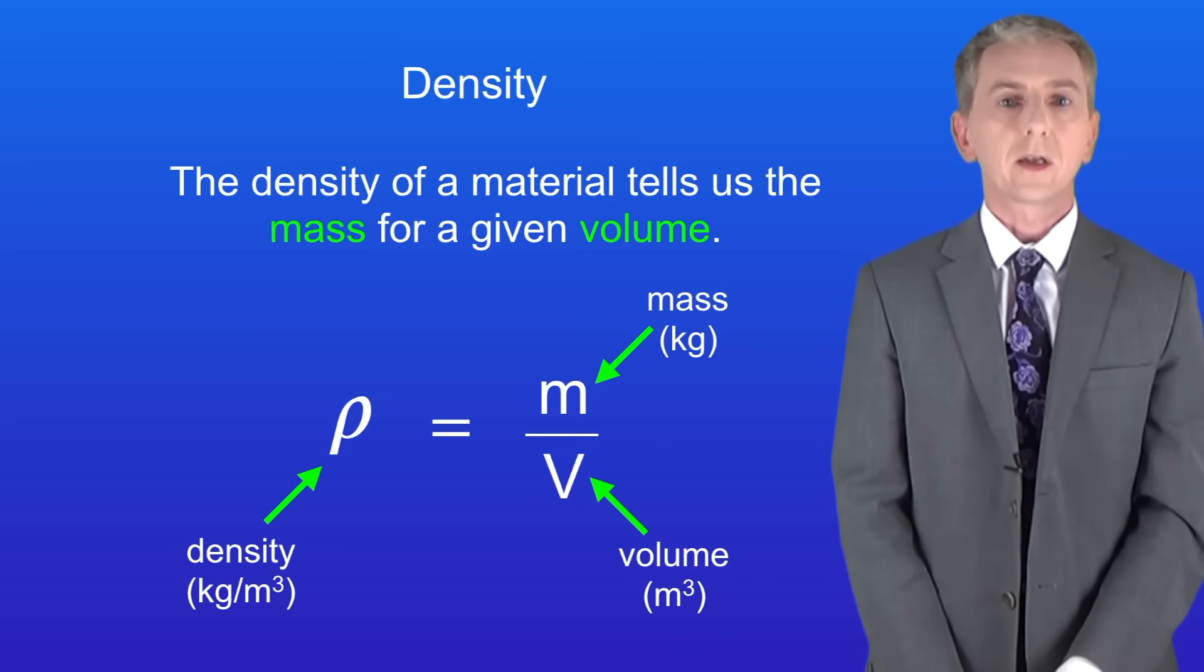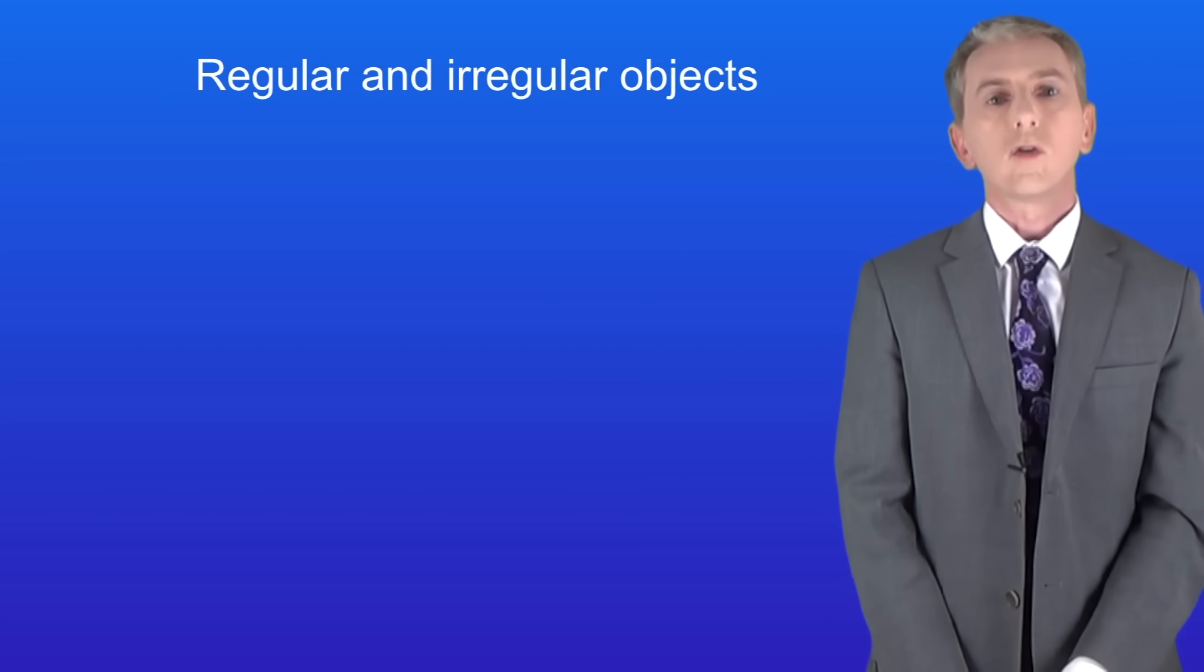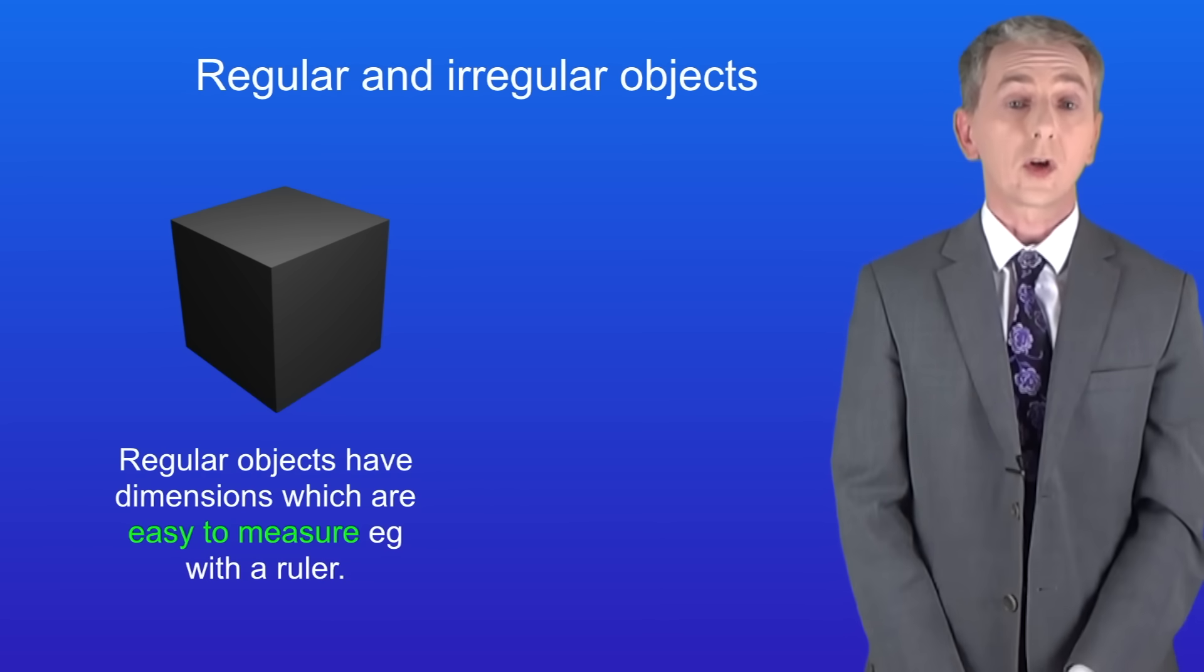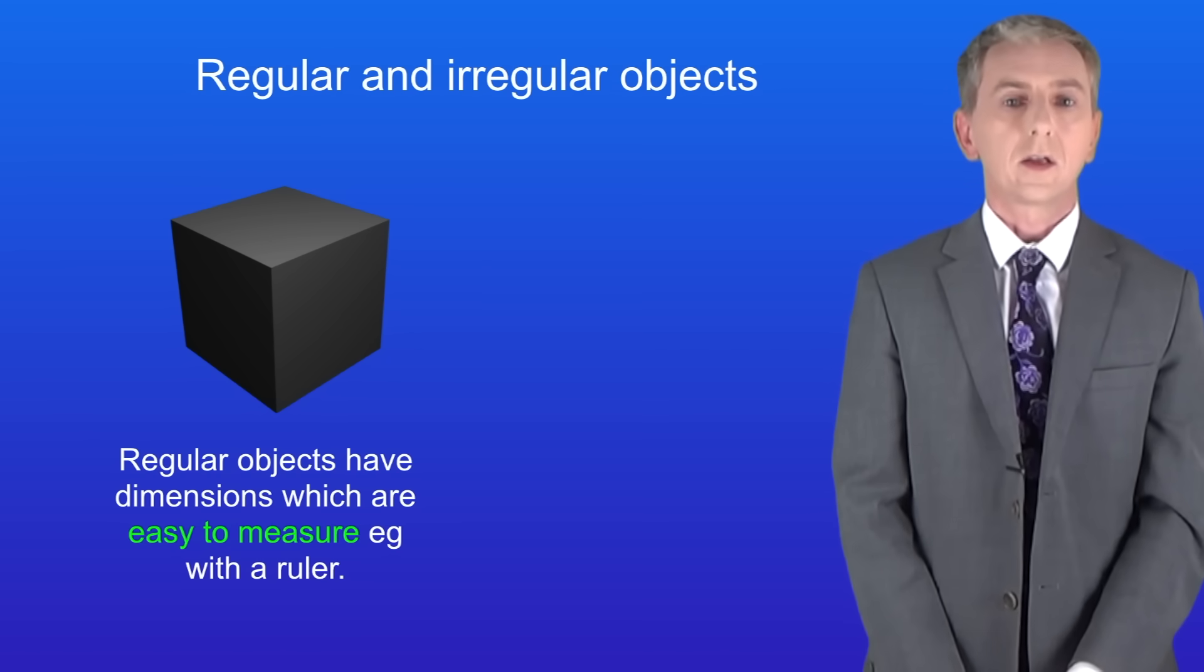So in this video we're looking at how we can determine the density of objects. Now objects can be divided into two broad categories. Regular objects such as this cube have dimensions which are easy to measure so we could easily measure the length of each side using a ruler.